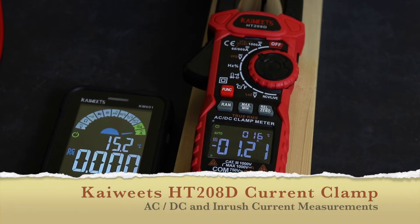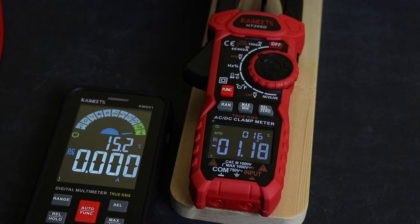Welcome back to the channel and part two of the tests carried out on the Kaiwitz HT208D current clamp meter. I've actually had accuracy problems on both DC and AC current measurements, predominantly at higher amperages, so I'll put the tables up that I've made up from the readings that I've taken.